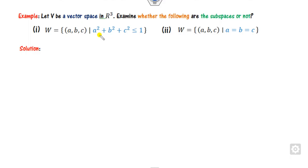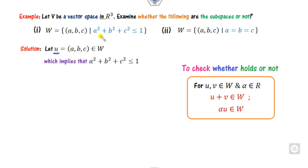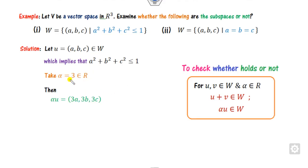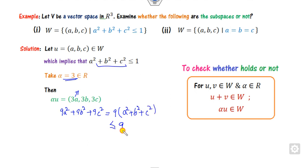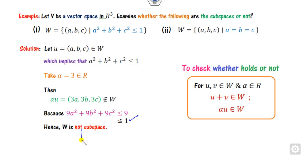Consider W = {(a,b,c) ∈ R³ : a² + b² + c² < 1}. Take u in W and let alpha = 3. Then alpha*u gives components (3a, 3b, 3c), so we need 9a² + 9b² + 9c² < 1, i.e., 9(a²+b²+c²) < 1. But we only know a²+b²+c² < 1, so it could be, say, 0.9, giving 9 × 0.9 = 8.1, which is not less than 1. Hence this property does not hold — it is not a subspace.